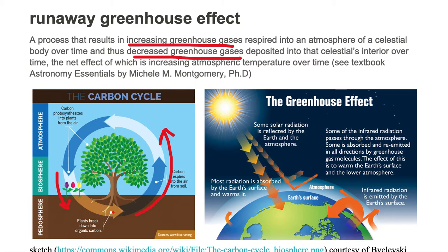So if we have equal amounts coming out and going in, then we would just have a carbon cycle. But if we have more coming out and less going in, then we're going to end up with more in the atmosphere and less in the ground, which is going to be a runaway effect. So over time, we put more and more greenhouse gases in the atmosphere and less and less in the ground.